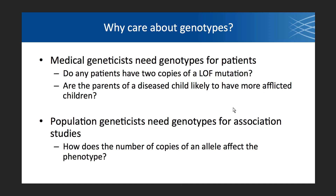A lot of people only care about variants — they want to know how their sample differs from the reference or where there is variation in a population. They say it doesn't matter if it's heterozygous or homozygous variant, but you should care about genotypes. It has implications for medical genetics: whether patients have two copies or one copy of a loss-of-function mutation affects the protein. Knowing genotypes in a family can predict whether parents of an affected child will have another afflicted child. Population geneticists also use genotypes in association studies because the number of copies equates to allele dosage — more copies of a variant protein if homozygous may produce a stronger effect.